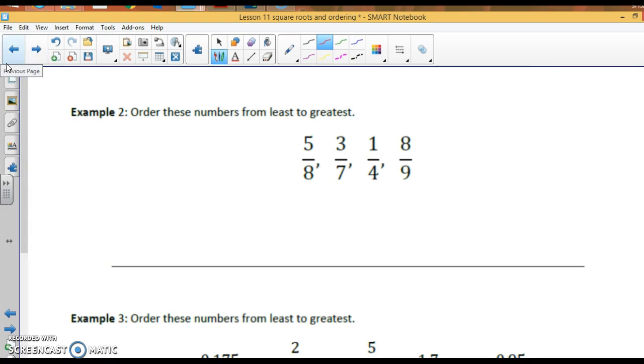Order these numbers from least to greatest. Let's use common sense. Which number is obviously the smaller? Well, 1/4. Isn't that a small number, 1/4? Yes. Closest to 0. Which number is obviously the biggest? 8/9. That's almost 1 because 9/9 would be 1. That takes care of this one and this one. Now, 5/8 and 3/7. Let's compare them to 1/2. Half of 8 is 4.